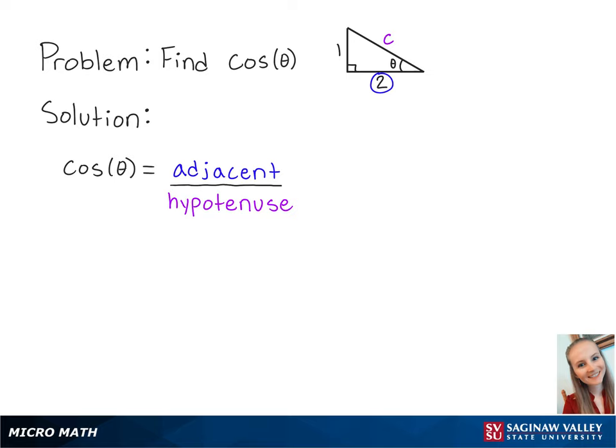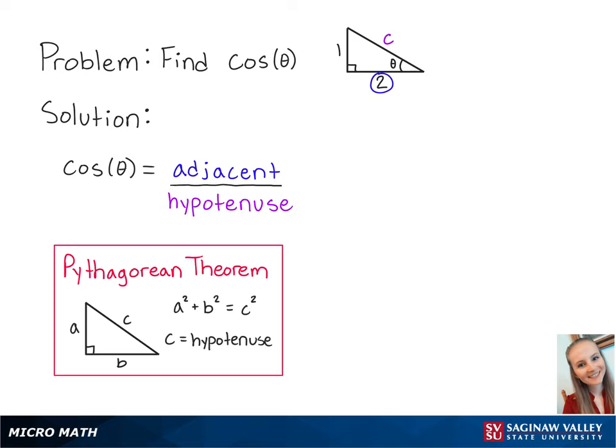Since we don't know the length of the hypotenuse, we're going to use the Pythagorean theorem to solve for C.